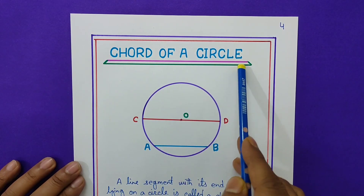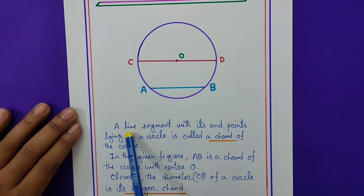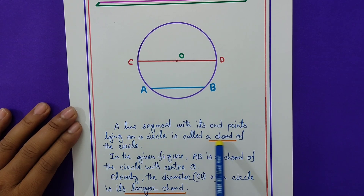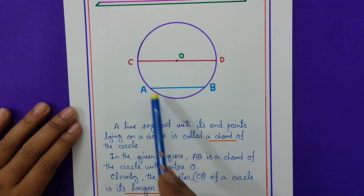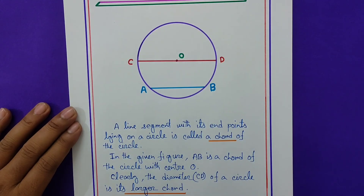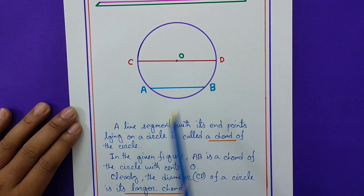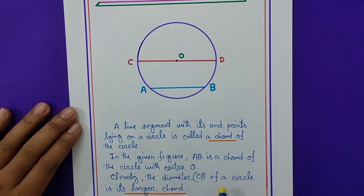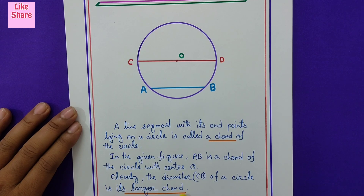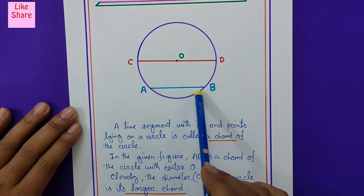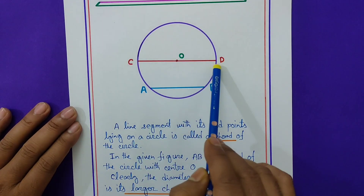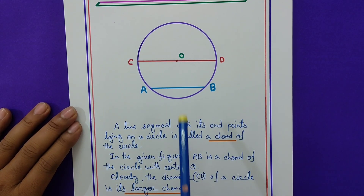Page number 4: chord of a circle. A line segment with its endpoints lying on a circle is called a chord of the circle. Here AB and CD are both chords. In the given figure, AB is a chord of the circle with center O. Clearly, the diameter CD is the largest chord of the circle — meaning any chord passing through the center is the diameter, and this diameter is called the largest chord.